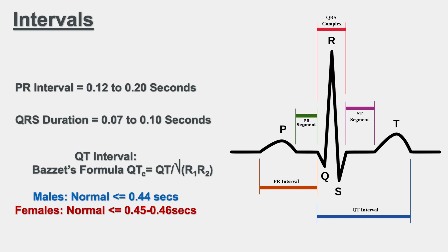Now that we know the basic approach to reading an ECG — rate, rhythm, axis, and intervals — we're going to use this information to assess disease conditions like left ventricular hypertrophy and right and left atrial enlargement in the next lesson. Please check out that lesson, and if you haven't already, please consider liking, subscribing, and clicking the notification bell. Thank you so much for watching and I hope to see you next time.